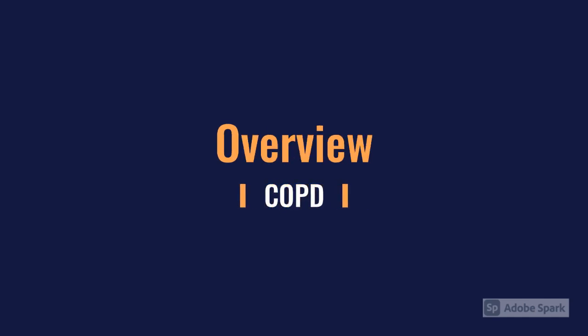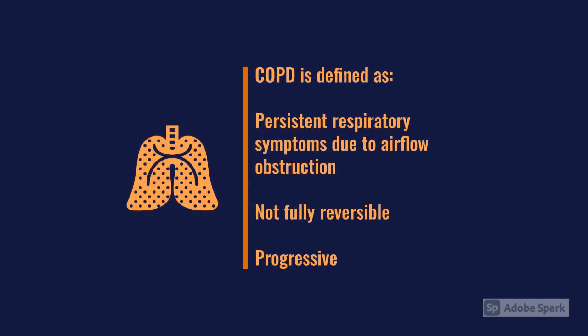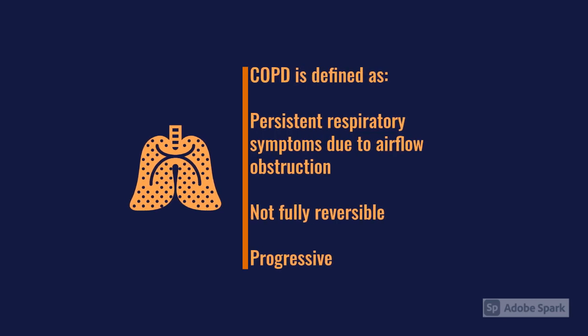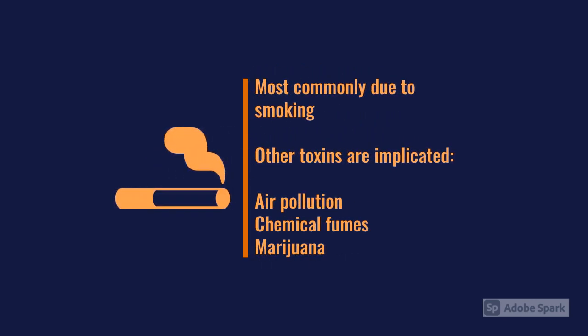COPD is essentially persistent respiratory symptoms due to airflow obstruction that's not fully reversible, which slightly differentiates it from asthma where the airflow obstruction is largely reversible. COPD is also progressive, so it's going to get worse with time, and it's most commonly due to smoking, although other toxins have been implicated recently — things like air pollution and chemical fumes.